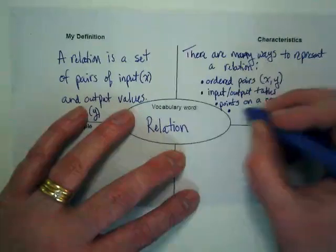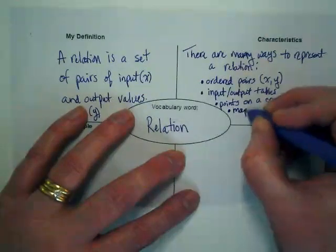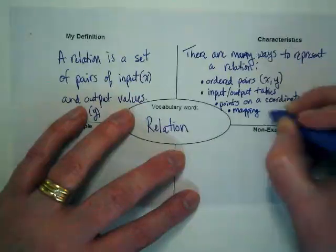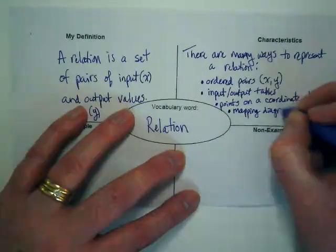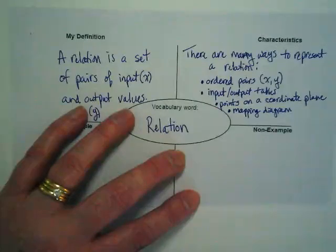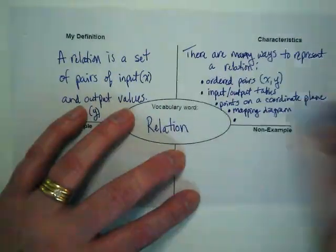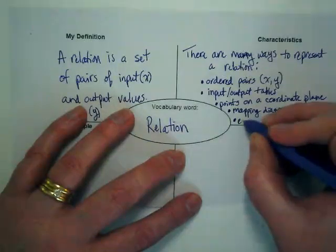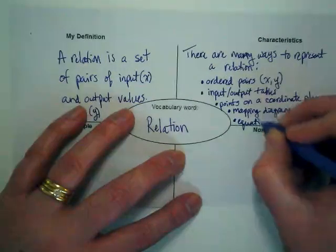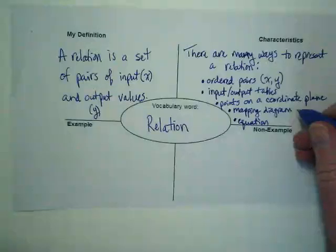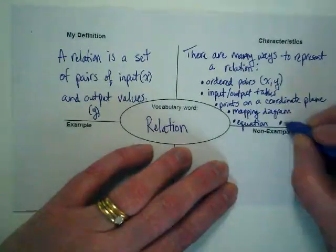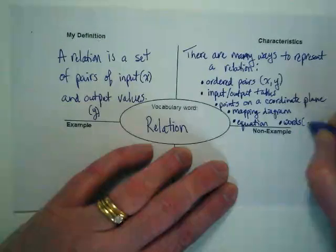One of the ways that's probably new to you is a mapping diagram. I'm going to run out of room for my bulleted list here. I've got two more things I'm going to write in. One is equation. And the final way is words or a sentence.